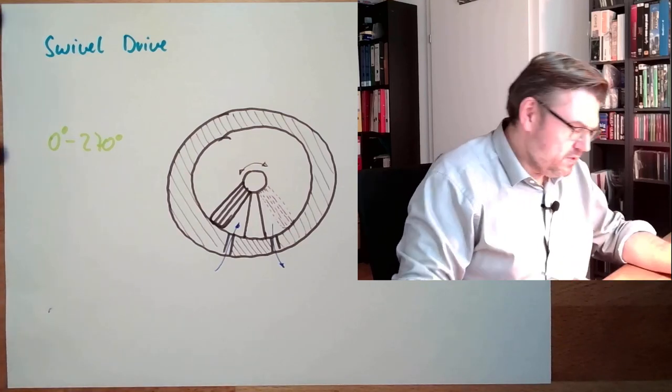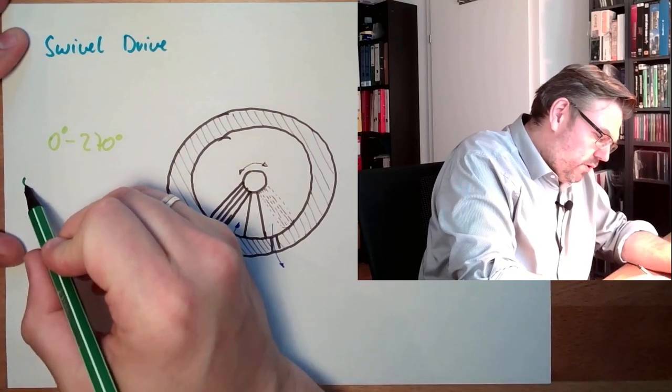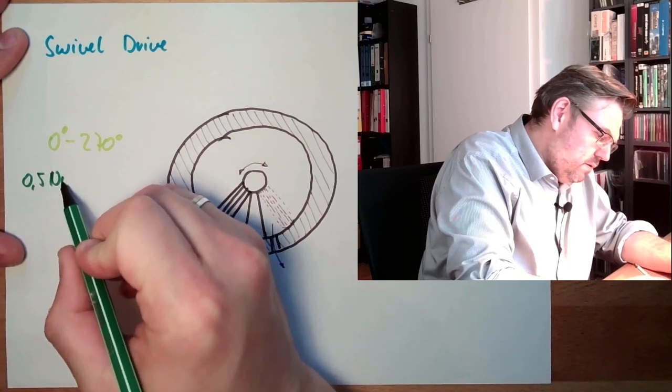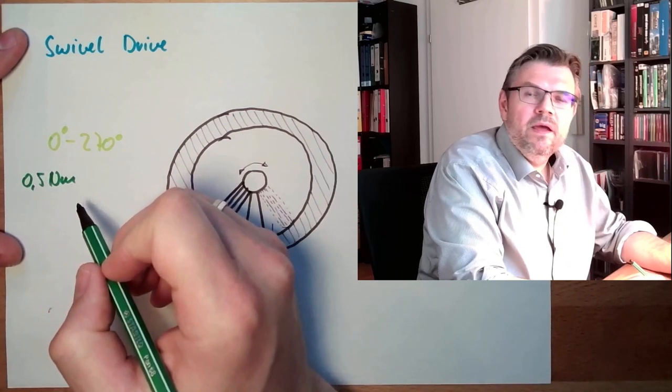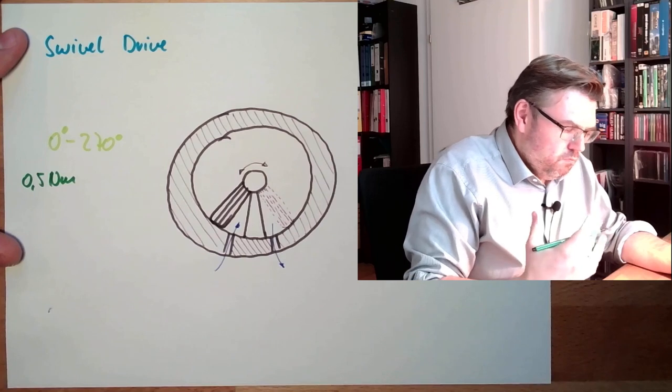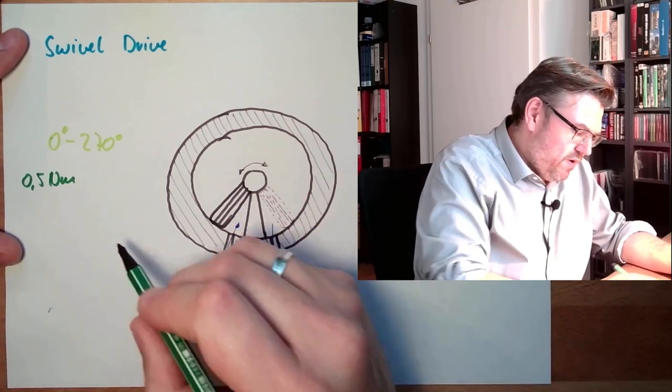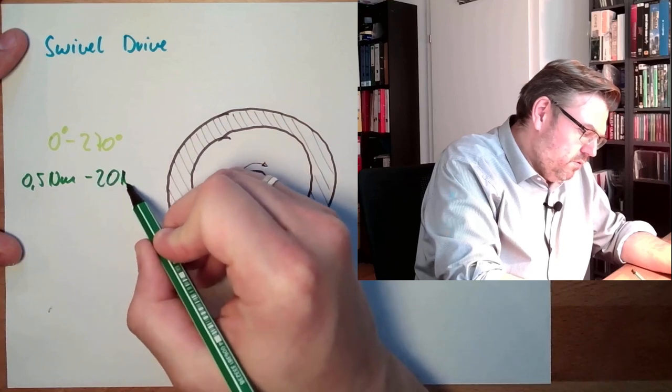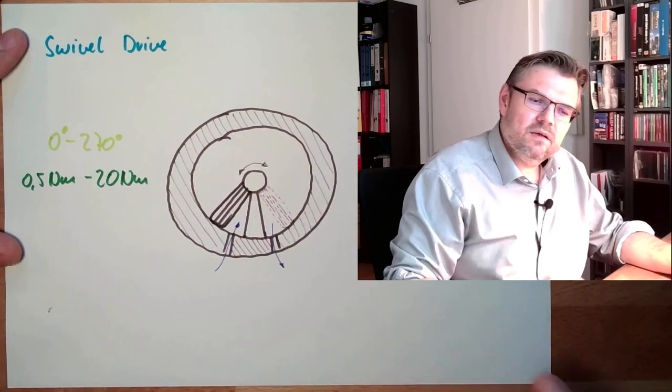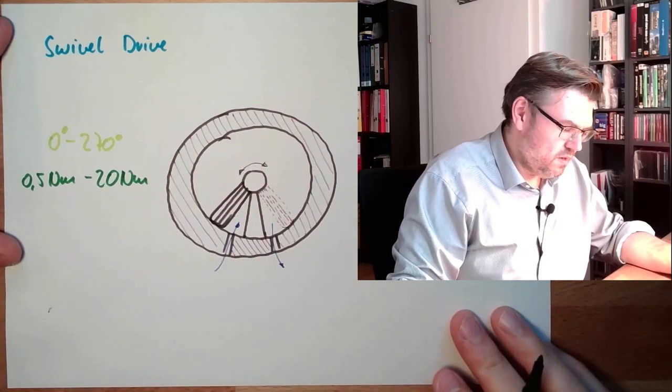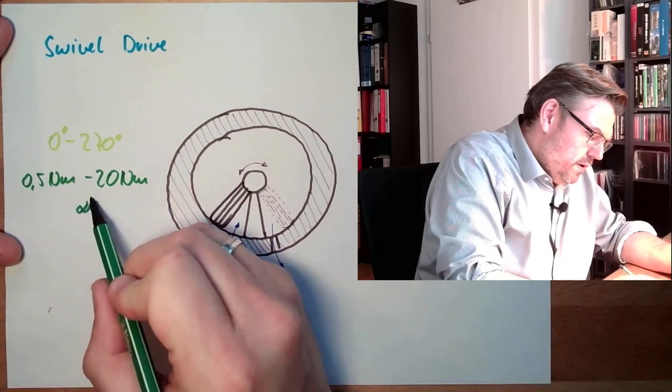And of course, there is also the torque. The torque can be 0.5 Nm, so small. And the maximum torque - it depends a little bit on the size of the flap, of course - but it would be 20 Nm. So a little bit less than the rotary cylinder, also at 6 bars.